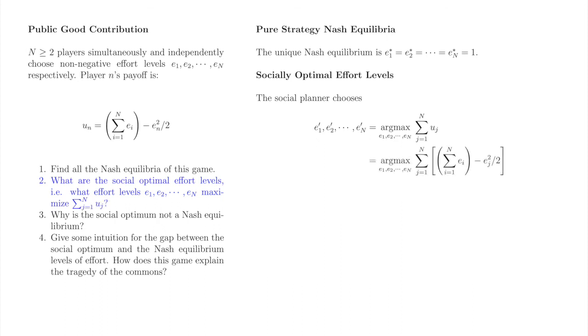We'll replace u little j with the expression for individual payoff functions given in the left-hand column. Now we'll untangle the sums. There is no j in the sum from 1 to big N of e little i, so summing that sum from j equals 1 to big N is equal to big N times the sum of the e little i. An exercise that will further help you convince yourself that these expressions are equal is to let big N equal 2 and write everything out.